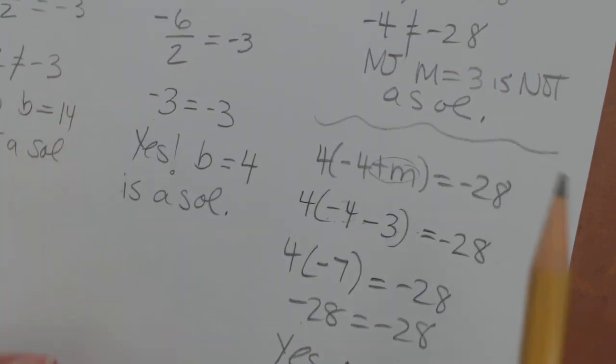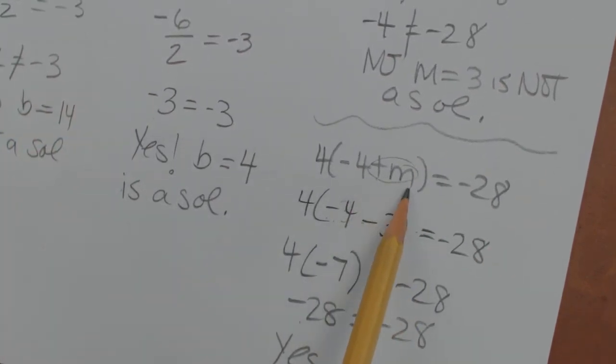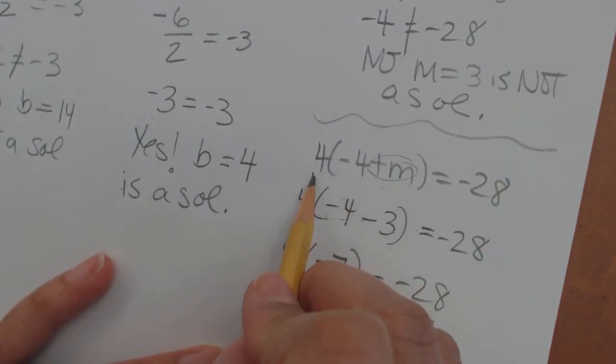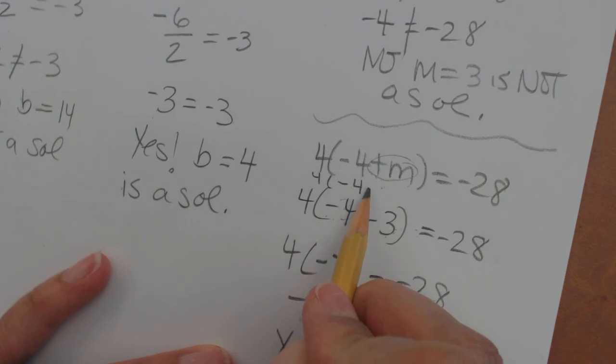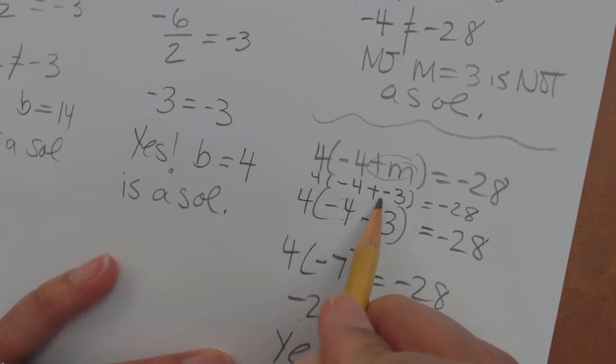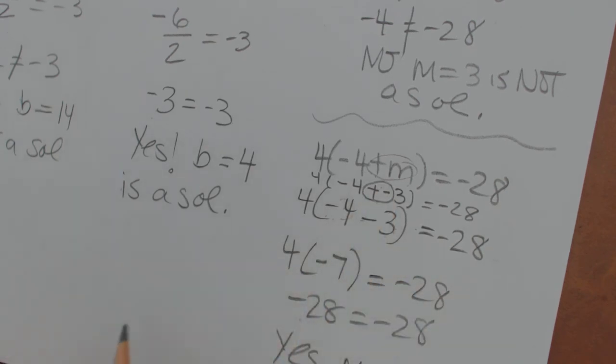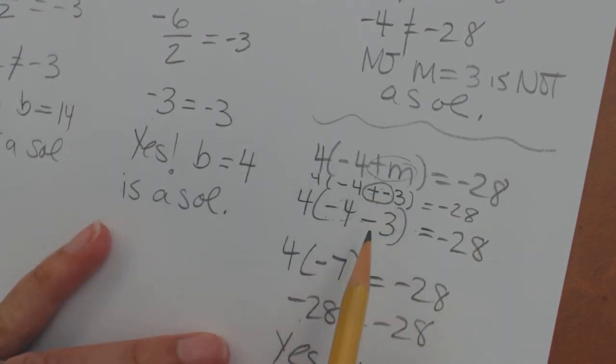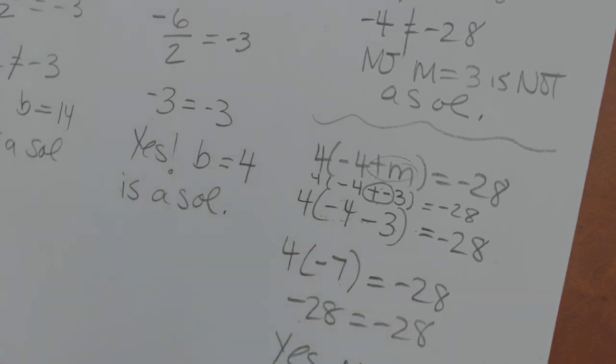Now I just want to go back because this was positive m. We could have written this as 4 minus 4 plus a negative 3 equals negative 28. We could have done that. However, we have these double signs there. And I don't want to use double signs. So when we add the opposite, what we're doing is subtracting. So negative 4 minus 3. That's what gave us the negative 7.